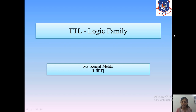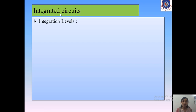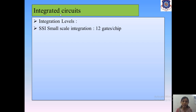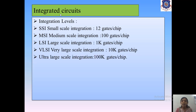Before starting the TTL logic family, it is necessary to understand the basics and fundamentals of ICs — what are ICs, integrated circuits. Let us continue with the different integration levels. The meaning of integration is that different gates or components are fabricated on a single chip. The types are: SSI (small scale integration), MSI (medium scale integration), LSI (large scale integration), VLSI (very large scale integration), and ULSI (ultra large scale integration).